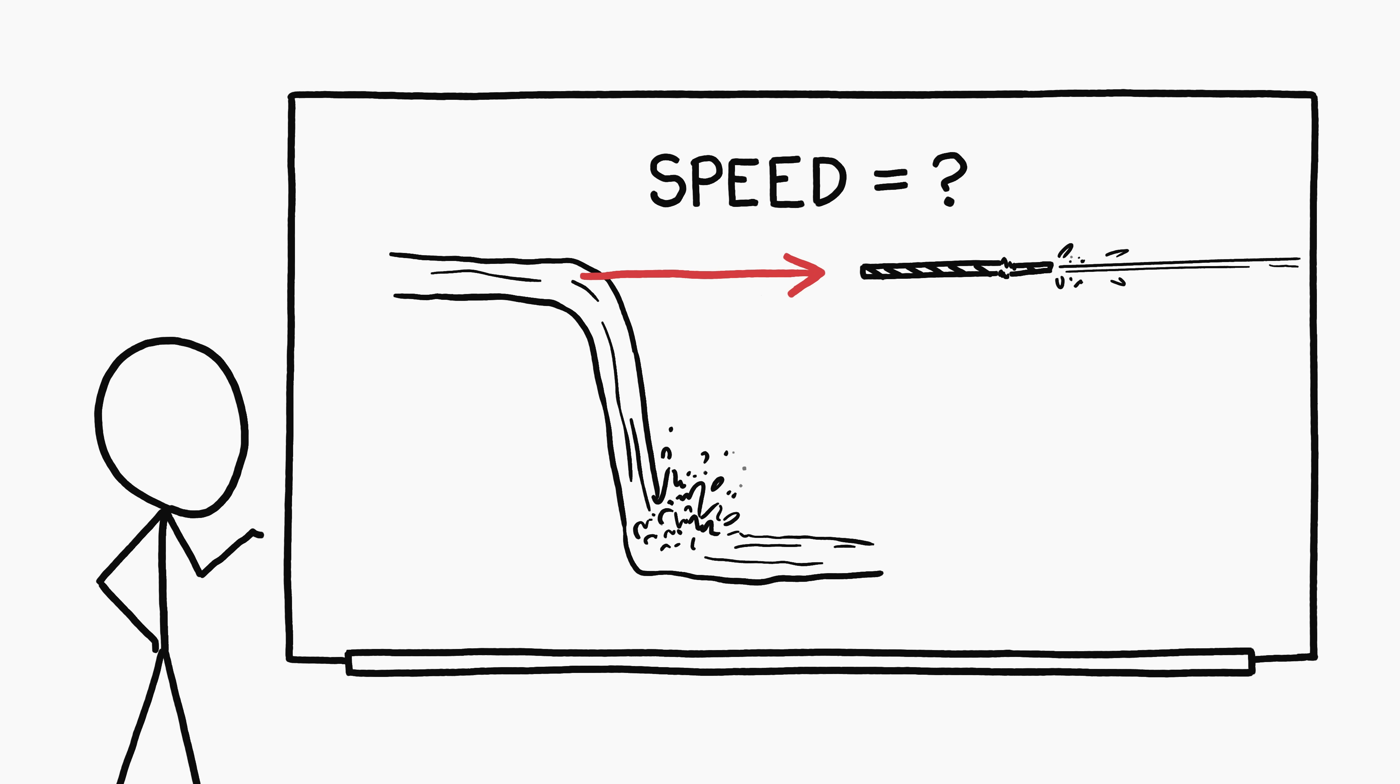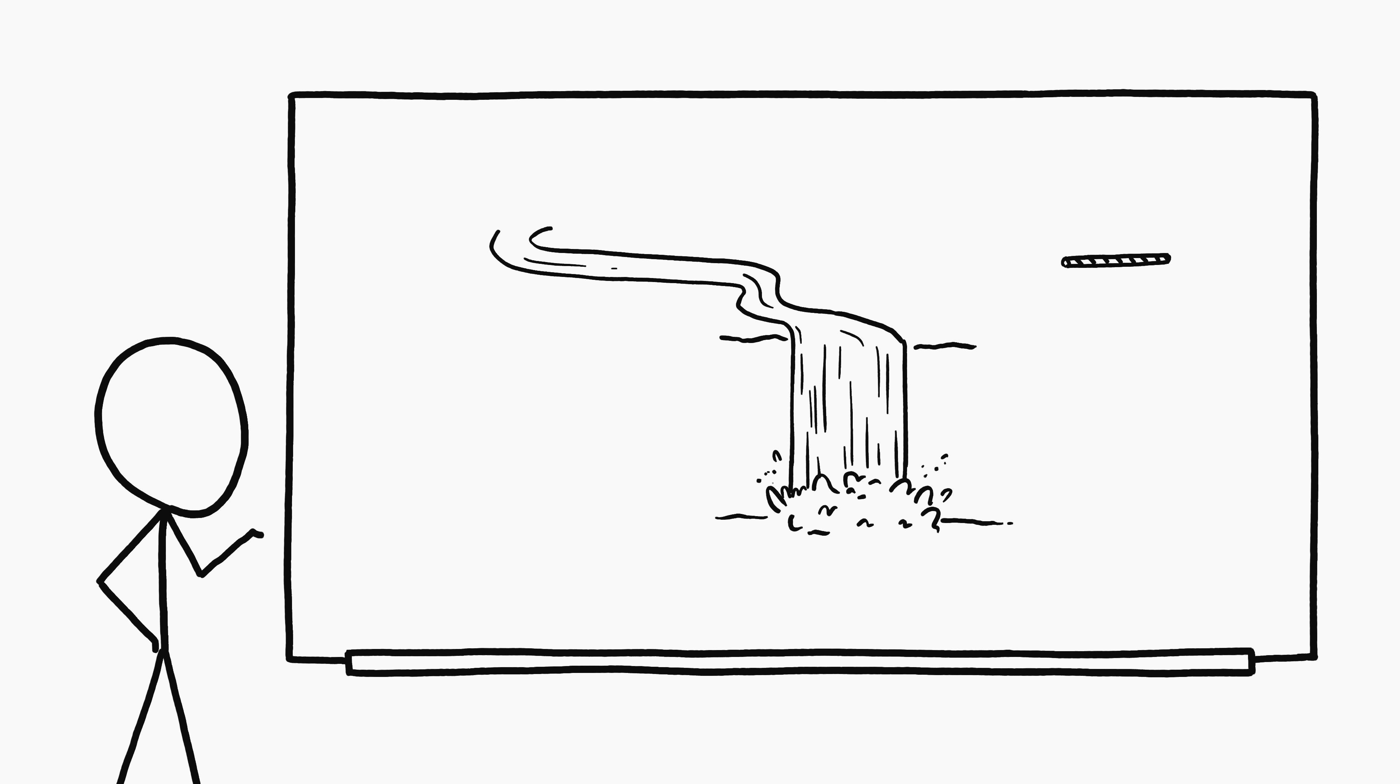So, how fast does Niagara Falls need to go to fit through a straw? This is easy to figure out. All we need to know is the flow rate over the falls and how much area it needs to fit through. The flow rate over Niagara Falls is at least 100,000 cubic feet per second, which is actually mandated by law.